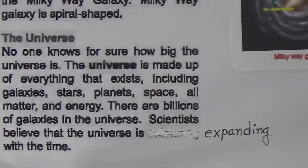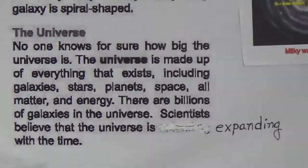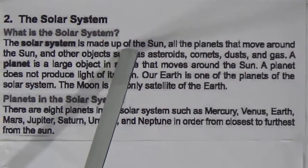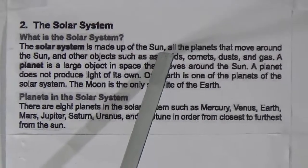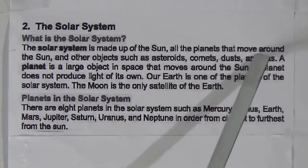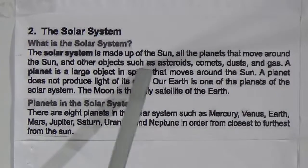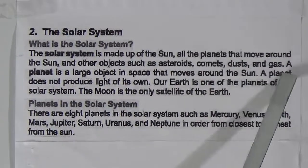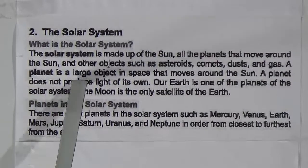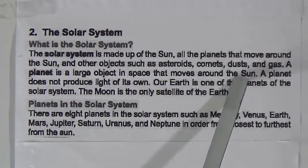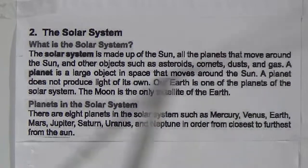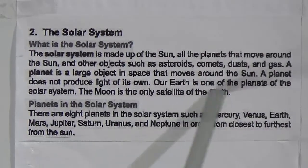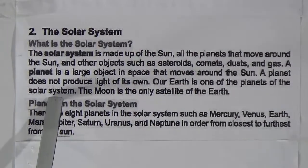Now, the solar system. What is the solar system? The solar system is made up of the sun, all the planets that move around the sun, and other objects such as asteroids, comets, dust and gas. A planet is a large object in space that moves around the sun. A planet does not produce light of its own. Our Earth is one of the planets of the solar system.